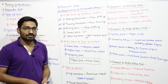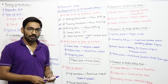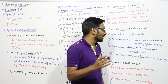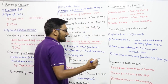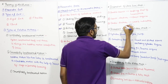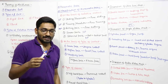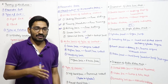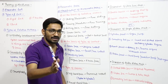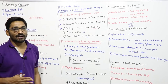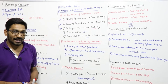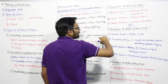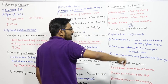Now we will see the inversions of mechanisms. Inversion: if there are L number of links in a mechanism, then the number of inversions will be less than or equal to L. You get an inversion by fixing different links — if you fix one link you get one type of mechanism, if you fix another you get another type. In the four-bar mechanism there are three types of inversion.